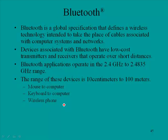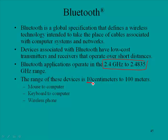Bluetooth is a global specification that defines a wireless technology intended to take the place of cables associated with computer systems and networks. Devices associated with Bluetooth have low-cost transmitters and receivers that operate over a short distance. Bluetooth applications operate in the 2.4 gigahertz to 2.4835 gigahertz range. The range of these devices can be as short as 10 centimeters and up to 100 meters.